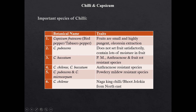Capsicum pubescens does not set fruit satisfactorily and contains a lot of moisture in the fruit. Capsicum baccatum is resistant to powdery mildew, anthracnose and fruit rot. Capsicum chinense and Capsicum baccatum are resistant to anthracnose. Capsicum chinense, also known as naga king chili or bhut jolokia, is from northeast India.